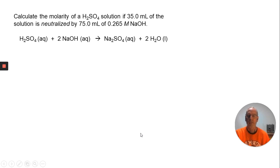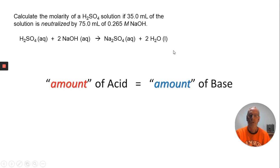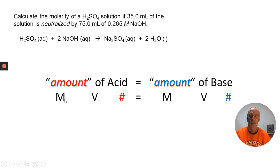Let's look at this one. Calculate the molarity of sulfuric acid if 35 mL of this acid is neutralized by 75 mL of this base. I gave you the balanced chemical equation. We know that the amount of acid has to equal the amount of base when something is neutralized. I'm going to use MV number equals MV number. Looking at sulfuric acid, when this dissociates, the number I would use here is 2. And for sodium hydroxide, when it dissociates, the number is going to be 1.